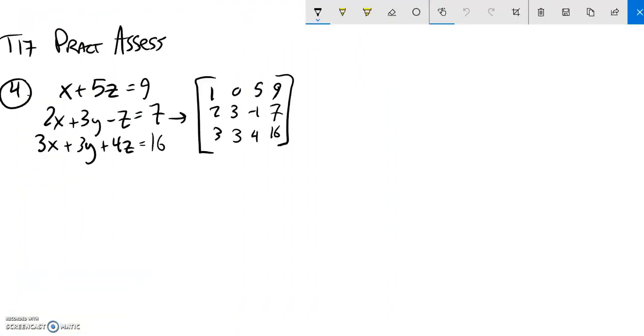We are going to solve this system right here. I've already written it as a matrix, and take note that there wasn't a y in the first equation, so we'll put a 0 in the y column for that.